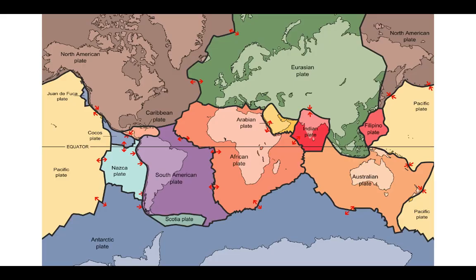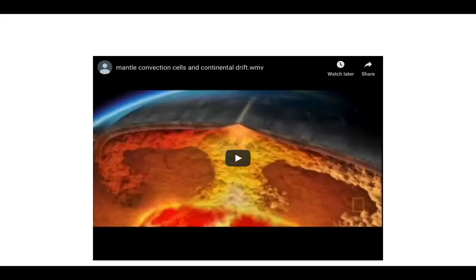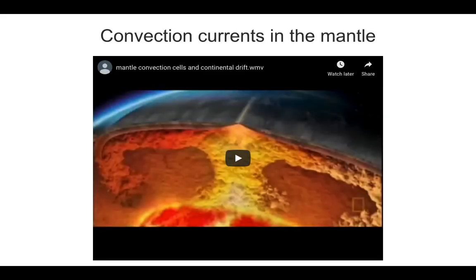Think about it. Earth's crust is broken into many plates. But how are these massive, brittle plates able to move? Pause the video and jot down your answer. If you guessed convection currents in the mantle, you are correct. If not, I'm looking forward to hearing some of your answers.